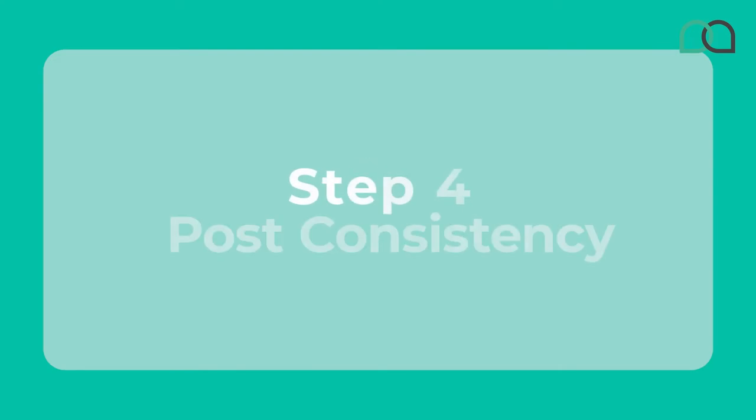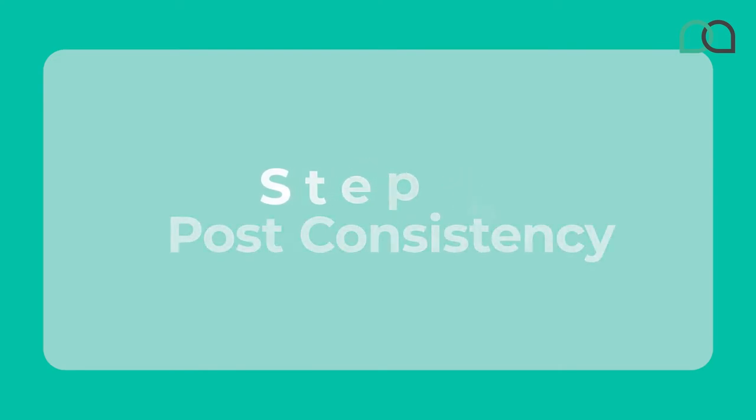Step four: decide on your post consistency. There's no one-size-fits-all for every business — a lot of businesses will upload between three to seven posts per week. At Outsourcing Angel, we actually started with one post per day including weekends. Then we realized over time that on the weekends our audience just wasn't in that work mentality, and it actually resulted in a lot of unfollows. So we adjusted our schedule and now post content five days a week, blocking out the Saturday and Sunday slots. And it's actually worked really well for us. Initially you might post a certain amount of times per week, and then adjust it according to the results.